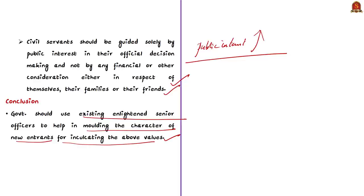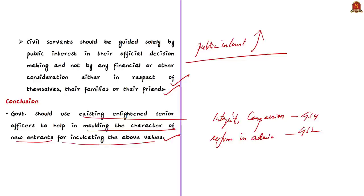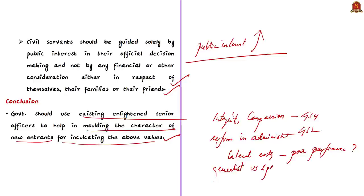This news article is useful for UPSC aspirants: the values of integrity and compassion can be used in GS4 (ethics paper), and the entire discussion can be used in GS2. Questions like reforms in Indian administration, the contentious issue of lateral entry to civil services due to poor performance of IAS officers, or the generalist versus specialist approach can all be addressed using these points.